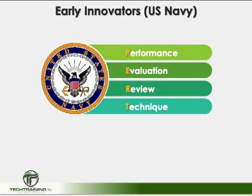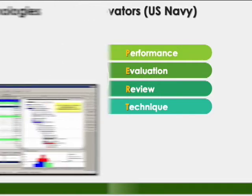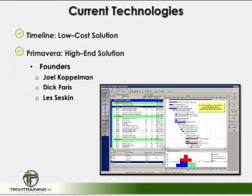The next big development in scheduling came in the 1950s. In about 1956 or 1957, James Kelly Jr. of Remington Rand and Morgan Walker of DuPont developed algorithms for what is known as the Arrow Diagramming Method, or ADM, the forerunner of the Critical Path Method, or CPM. At about the same time, the U.S. Navy created the Program Evaluation Review Technique, or PERT. PERT was slightly different from ADM as it considered probabilities — in other words, what-ifs. In the 1980s, PCs came along, leading to a large number of various scheduling systems combining ADM, CPM, and what-if methods.